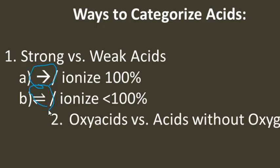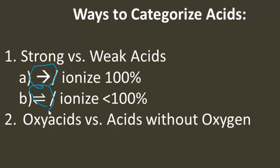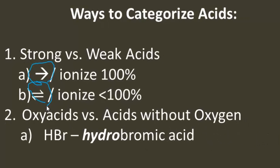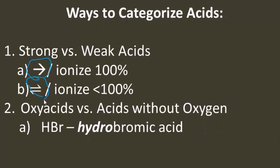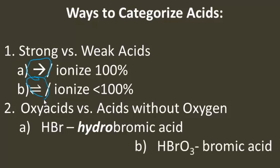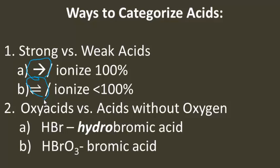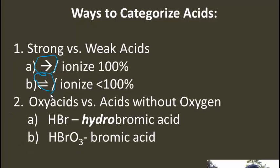Another way we categorize acids is when we name them. We said there's a group called oxyacids, and then there's a group of acids without oxygen. For example, for an acid without oxygen such as HBr, we always include that prefix and we call it hydrobromic acid. Whereas an oxyacid with the polyatomic ion bromate becomes bromic acid, and there's no prefix hydro.